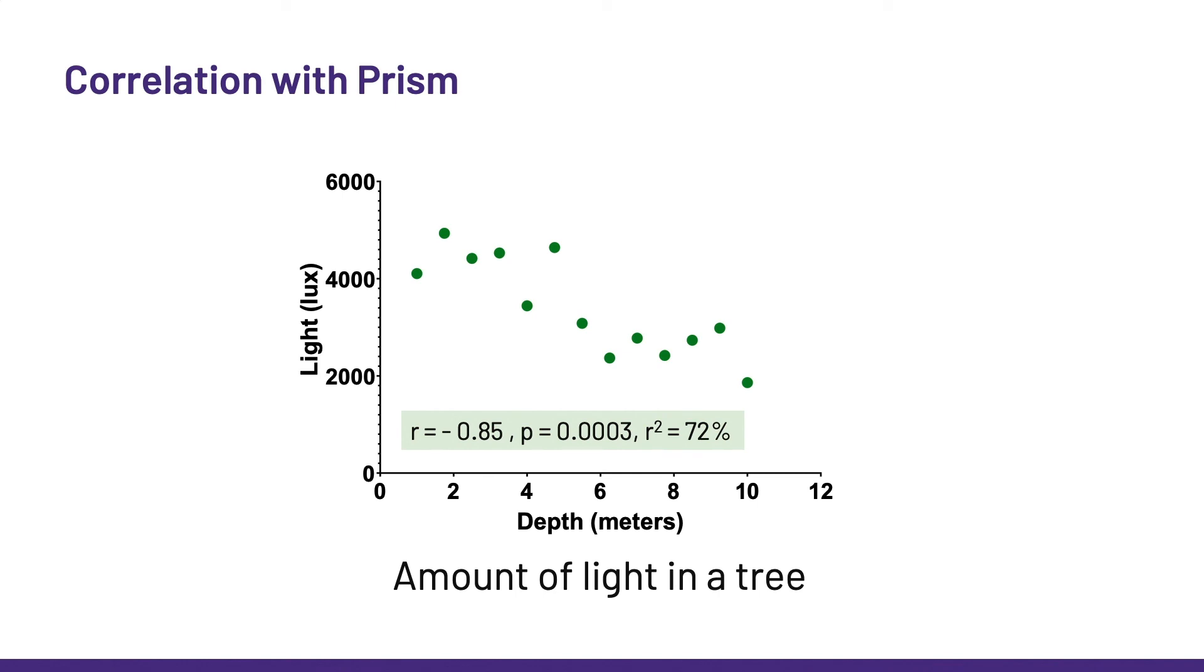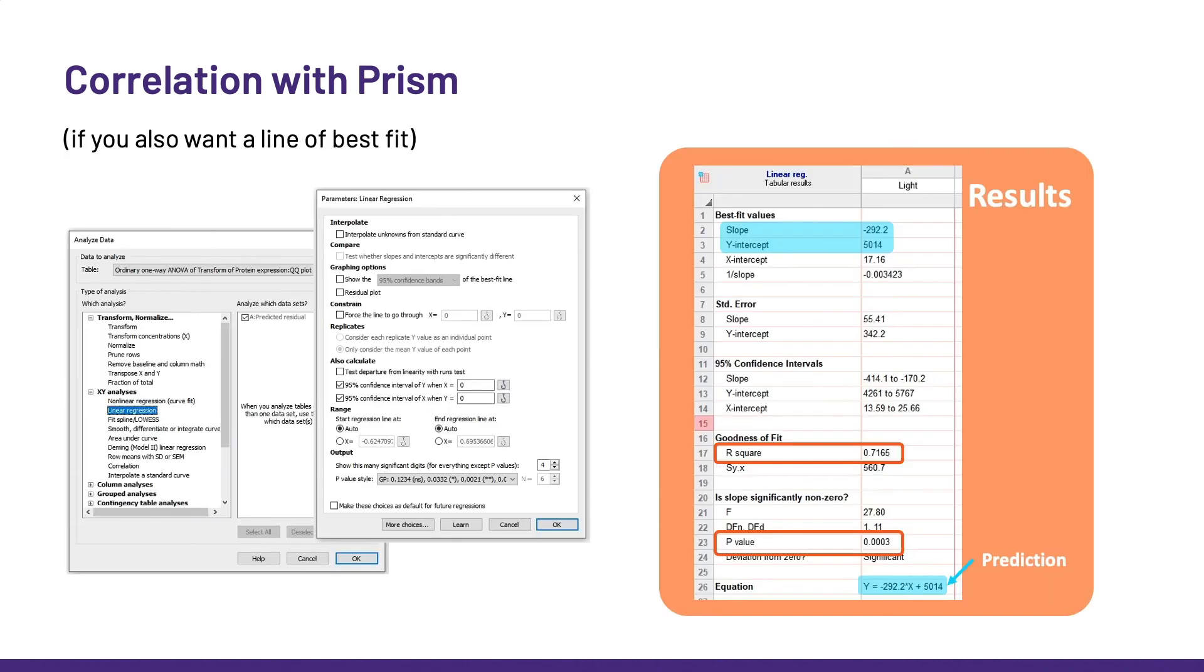So here we go again. In the X, Y section, we choose linear regression, and the defaults in Prism are OK, for what we want to do here.